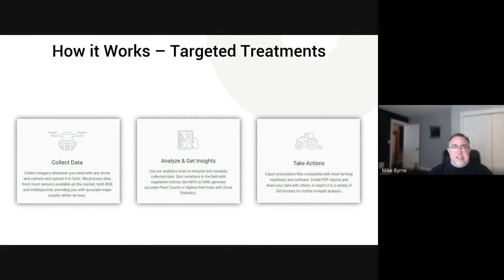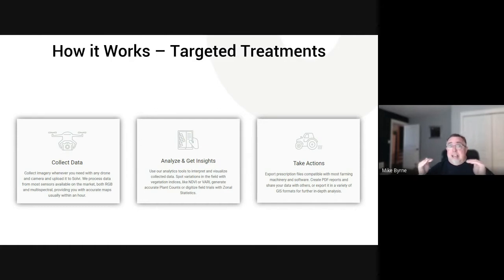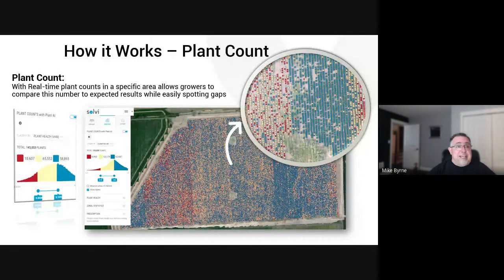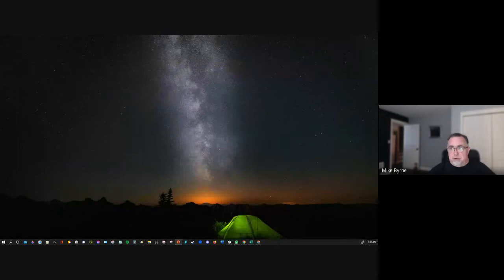One of the reasons we're gathered here today is counting. Counting is a massive concern in the agricultural industry — it's labor intensive and requires a lot of additional steps to get accurate counts. One of the benefits of aerial imagery is we can, at a very precise level, give you accurate counts across the entire field. I'll step out of the presentation mode and walk into the application to walk you through how the process would work with a real dataset based on Christmas trees.